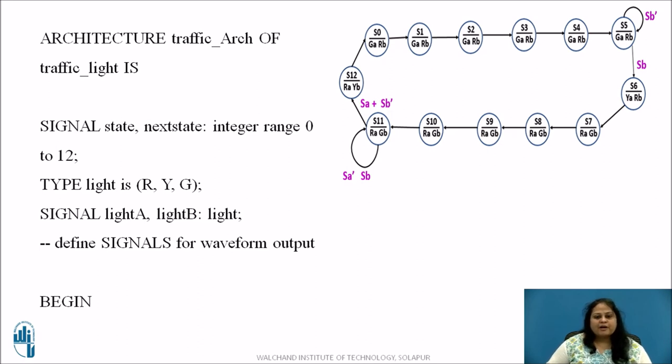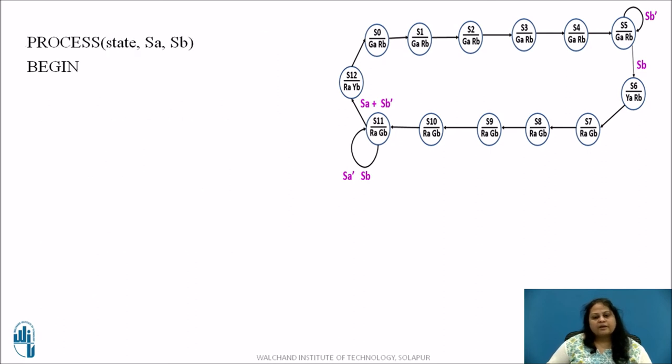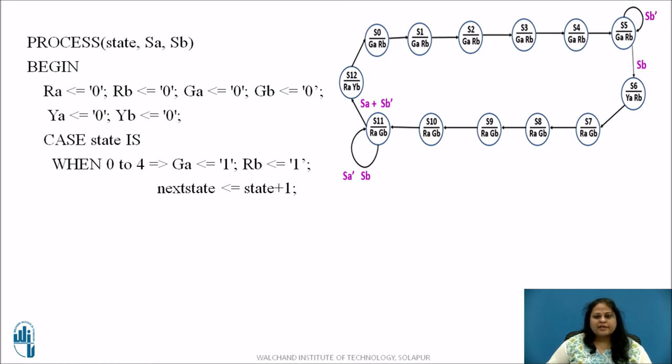Next, after the declaration part architecture begins. Here two processes are used to represent the state diagram. Whenever state SA or SB changes the first process updates the outputs and the next state. Initially all the outputs are set to 0. The case statement illustrates the use of a when clause with a range. As seen from the figure since the states S0 to S4 have the same outputs and the next states are in numeric sequence we use a when clause with a range instead of 5 separate when clauses. Therefore, when 0 to 4 GA and RB is 1 and next state is equal to state plus 1. When in state 5 GA equal to RB equal to 1 and if SB equal to 1 then next state is 6.